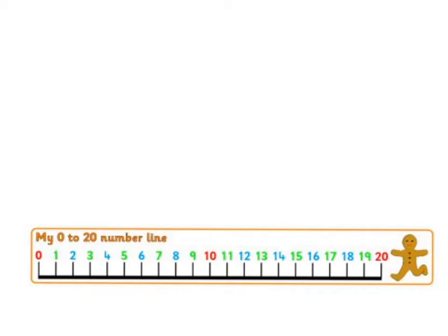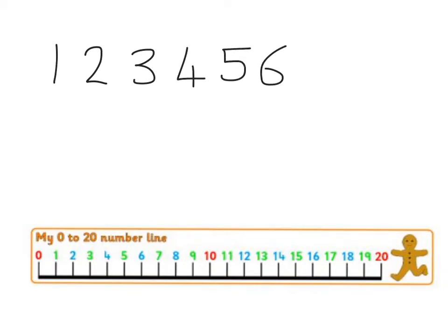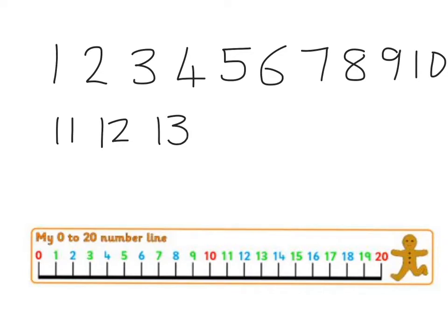Count with me to 20. 1, 2, 3, 4, 5, 6, 7, 8, 9, 10, 11, 12, 13, 14, 15, 16, 17, 18, 19, 20.